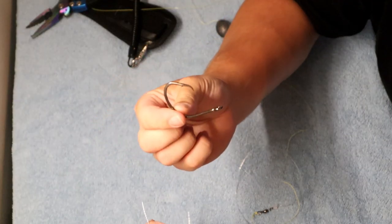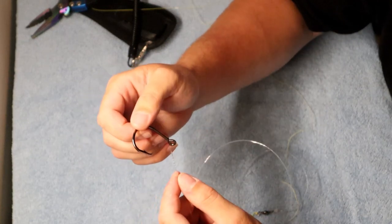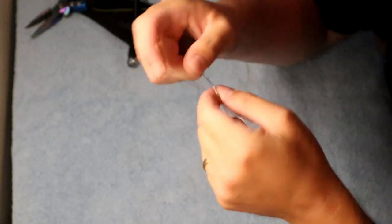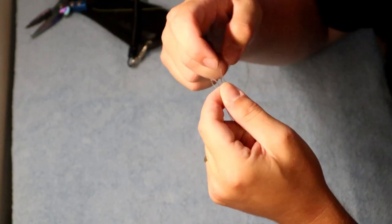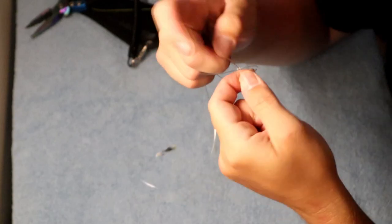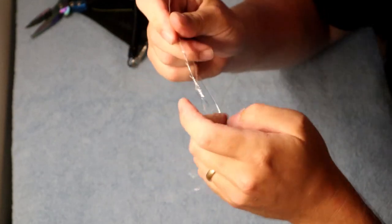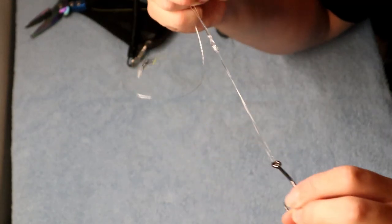Now I tie the same knot to my hook as I do to my swivel. I just tie a uni knot. One, two, three, four, and five. We got five wraps.